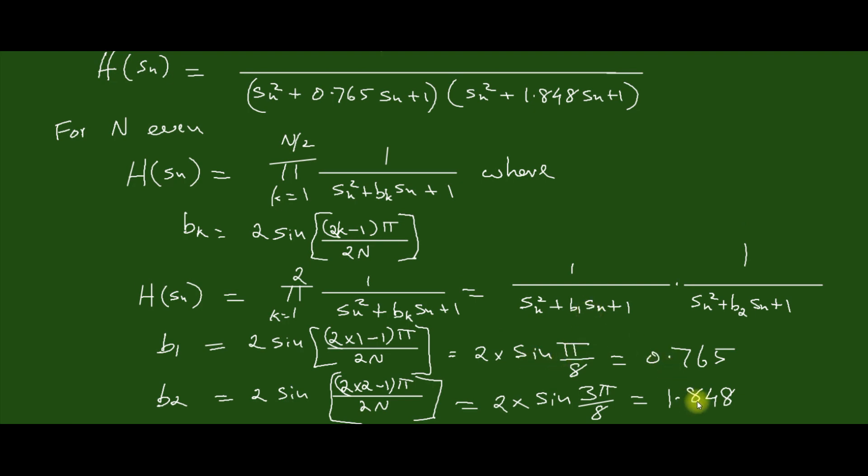Substituting for B_1 and B_2, we get the same expression as from the lookup table. So we have determined the normalized transfer function. Next we want to determine the unnormalized transfer function corresponding to the cutoff frequency ω_c. For that we have to determine the cutoff frequency.